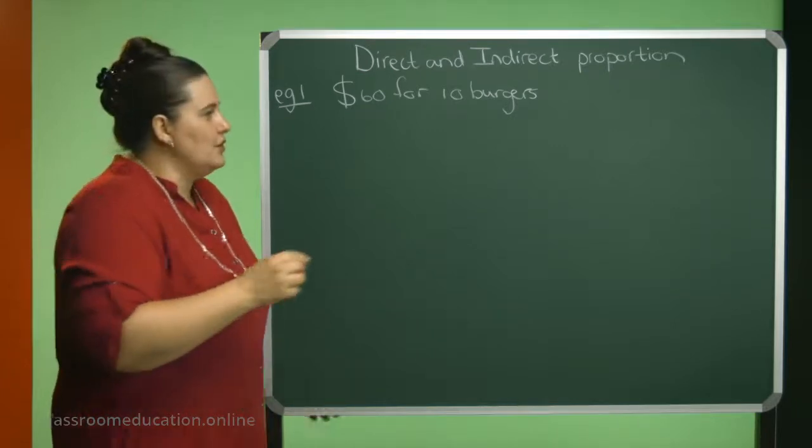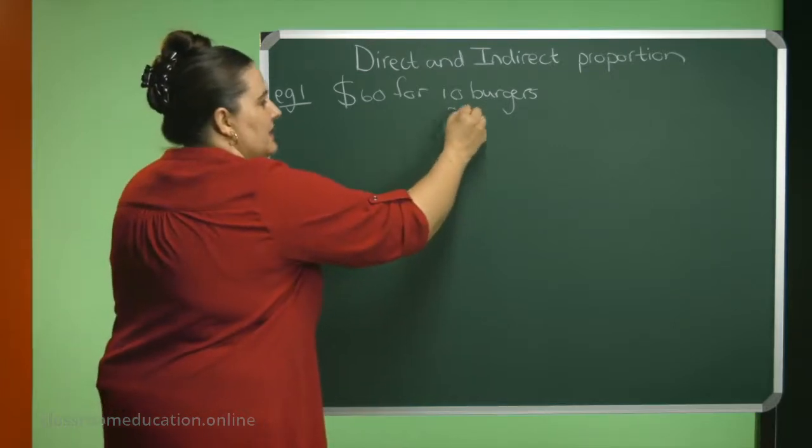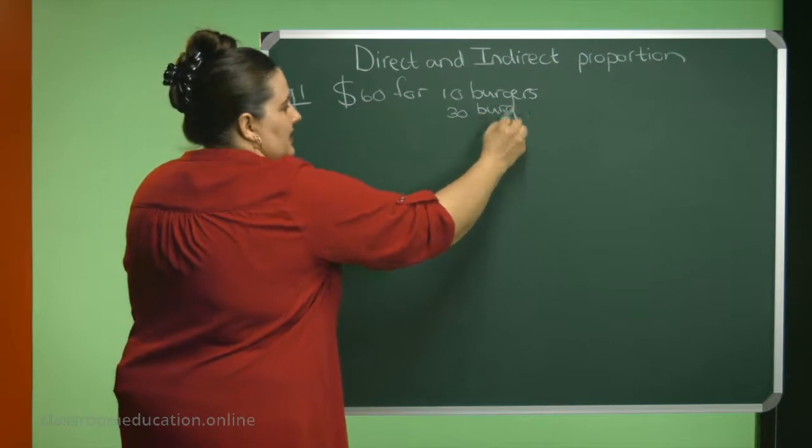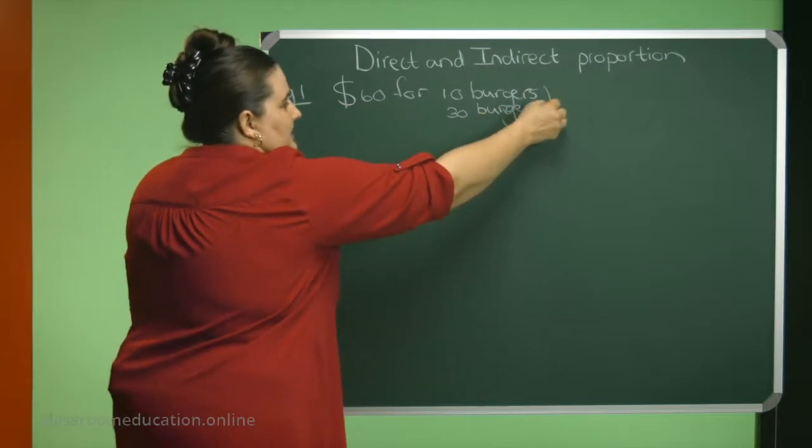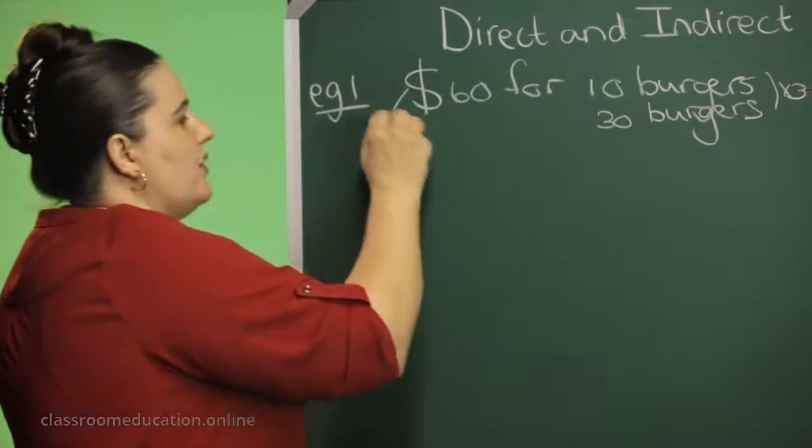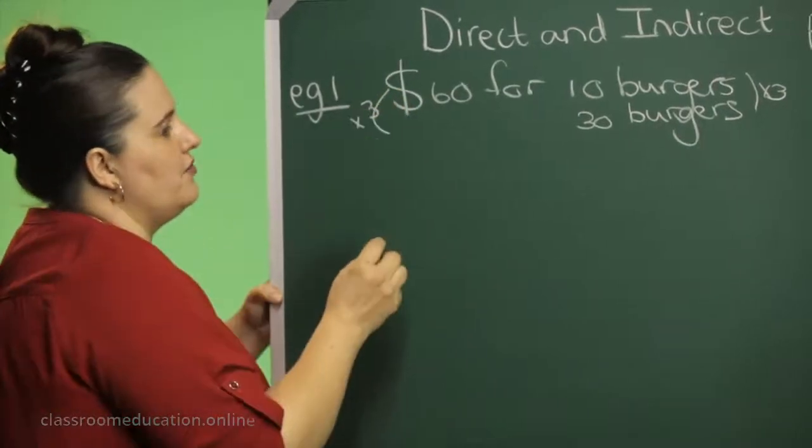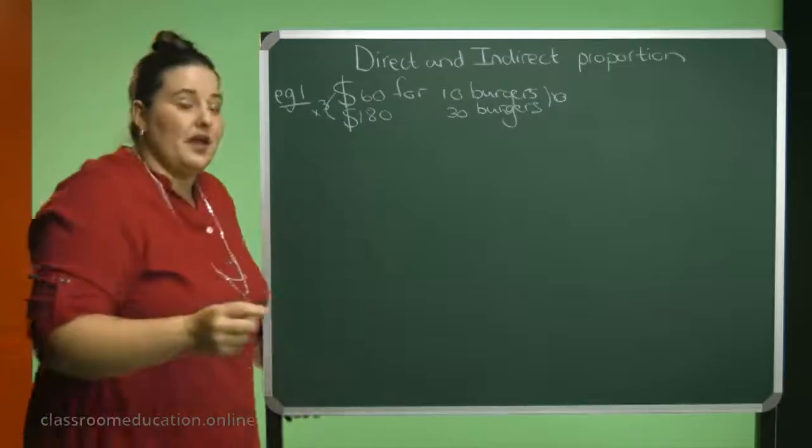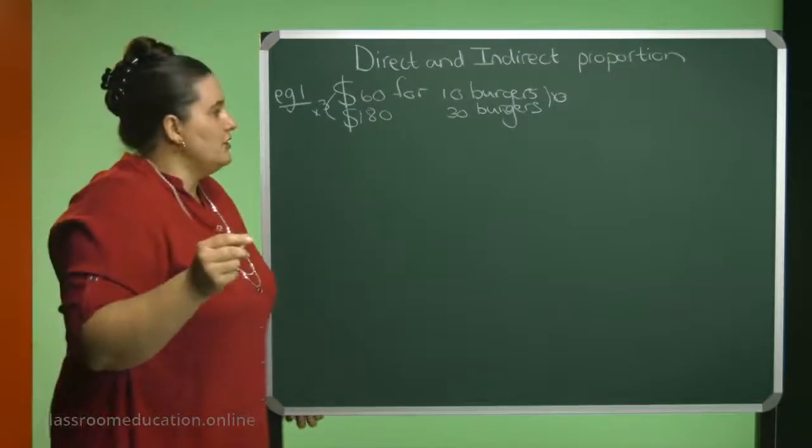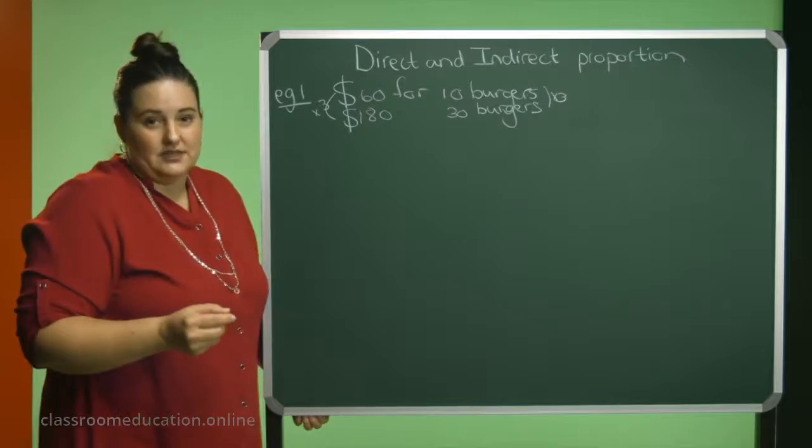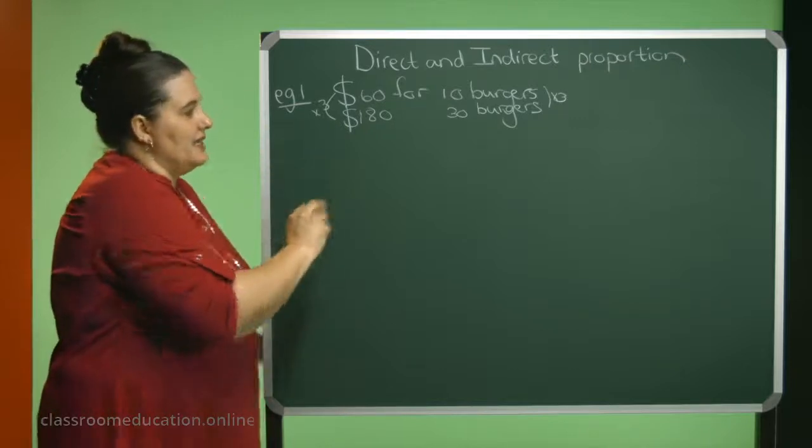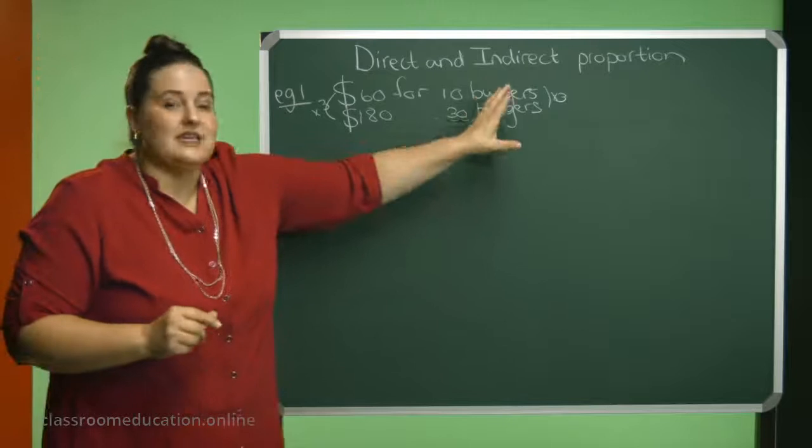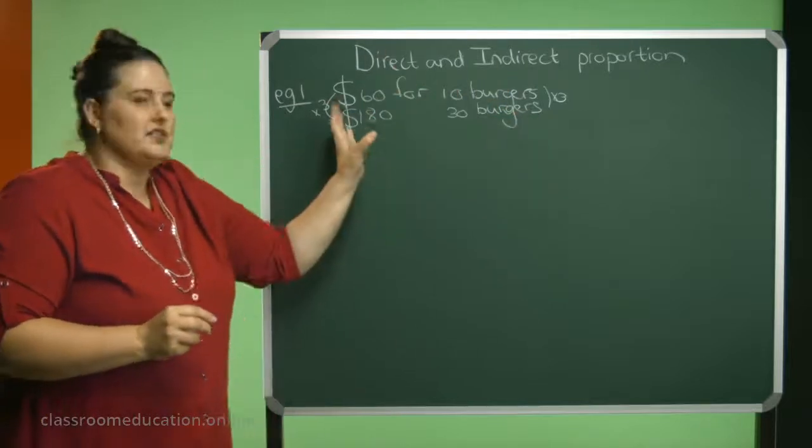Quickly think. So you would like to make 30 burgers. I times by 3, so the price here will also times by 3, and that will be $180. So to buy 30 burgers, you need to pay $180. Now what is happening here is if the quantity increase, your price will increase.